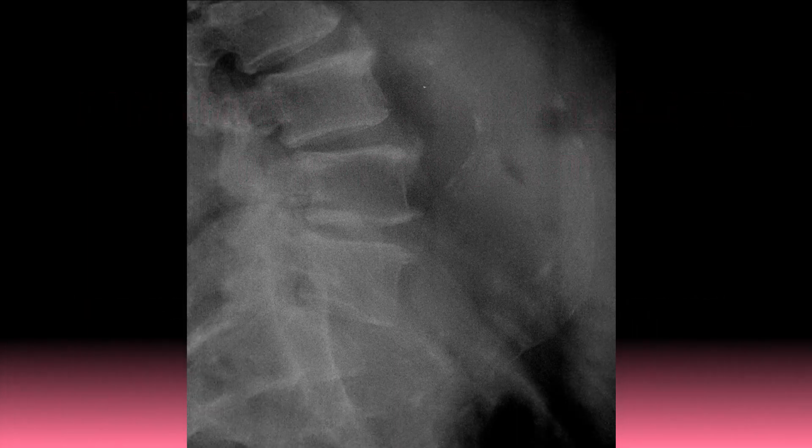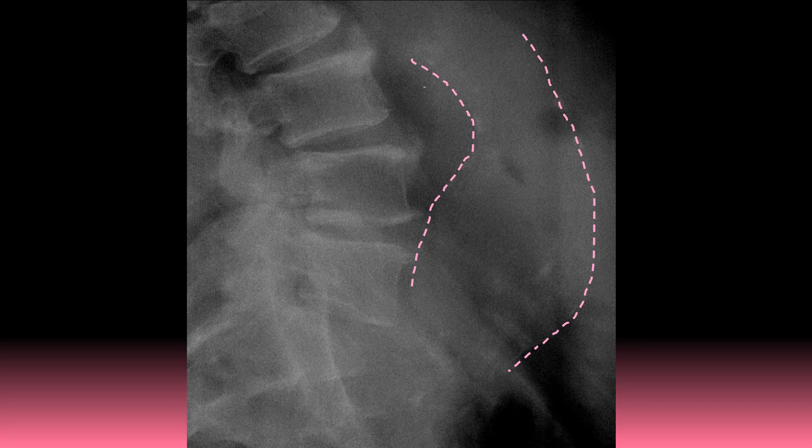Since most abdominal aortic aneurysms are asymptomatic unless they leak or rupture, they are commonly diagnosed incidentally during imaging for other indications. Let's try another example where we locate the visible portions of the atherosclerotic plaquing of the aorta and measure at its widest point.